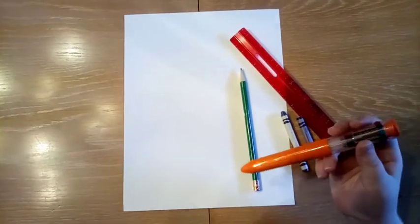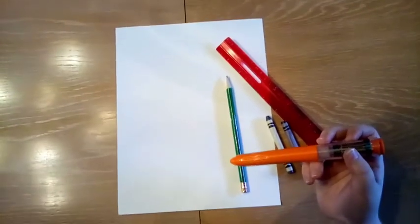Alright for this draft craft you're going to need a couple supplies. You're going to need one sheet of blank white paper, a pencil, a couple crayons, a ruler, and if you have a pen that has different colored inks like this that'd be great, but you can also just use a regular pen.